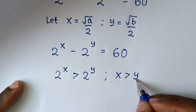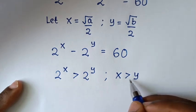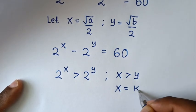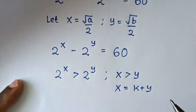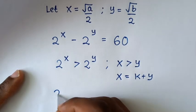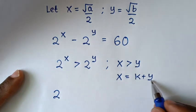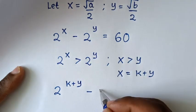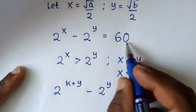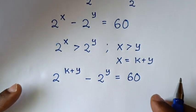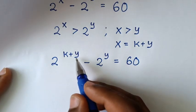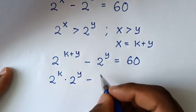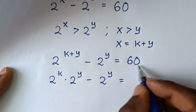Now, if x is greater than y, we'll let the difference as a constant k. So x is equal to k plus y. Then substituting x as k plus y, we get 2 to the power of k plus y, minus 2 to the power of y, is equal to 60. Since 2 to the power of k plus y equals 2 to the power of k times 2 to the power of y, then minus 2 to the power of y equals 60.